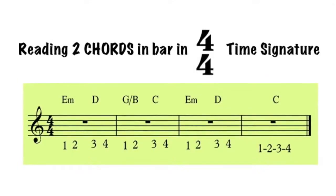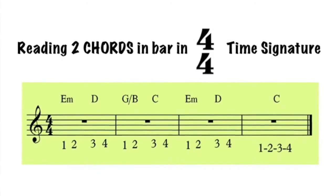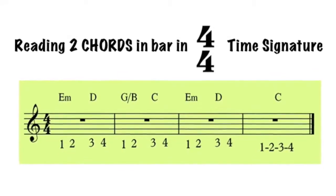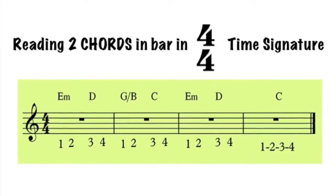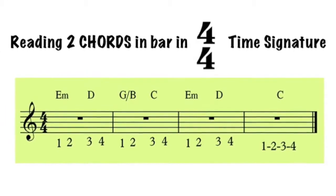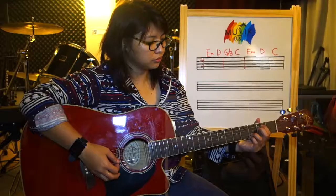The example shows that there are two chords in every bar. Simply divide each count evenly and play each chord for two counts.